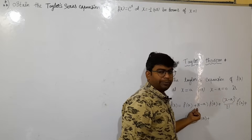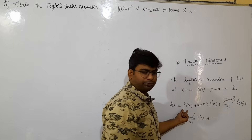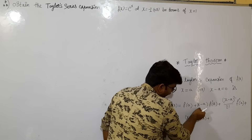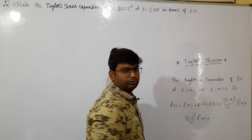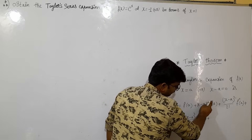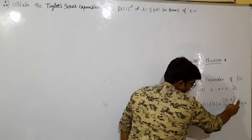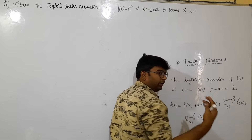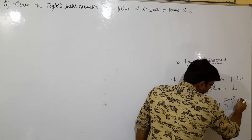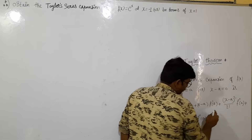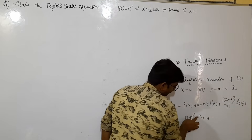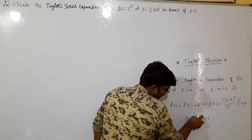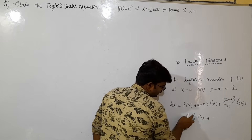The Taylor series formula is: f(x) equals f(a) plus first derivative term, then second derivative over 2 factorial, then third derivative over 3 factorial, fourth, fifth, sixth and so on. Each derivative term is paired with the corresponding factorial in the denominator.